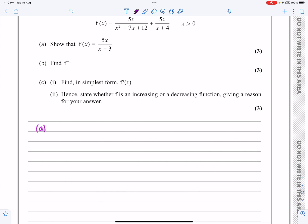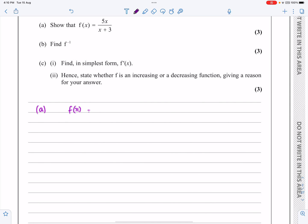Part A says, can I show that f(x), which is equal to 5x over this quadratic here, x² + 7x + 12, plus 5x all over x + 4, where x is greater than 0, can we make that into a single fraction there? What I would absolutely expect is to be able to factorize this quadratic. And even more than that, when I factorize it, I'd expect for one of the factors to be x + 4 here. And then it should simplify down quite nicely. Let's have a look at that. Yeah, it does. It factorizes to (x + 3)(x + 4).